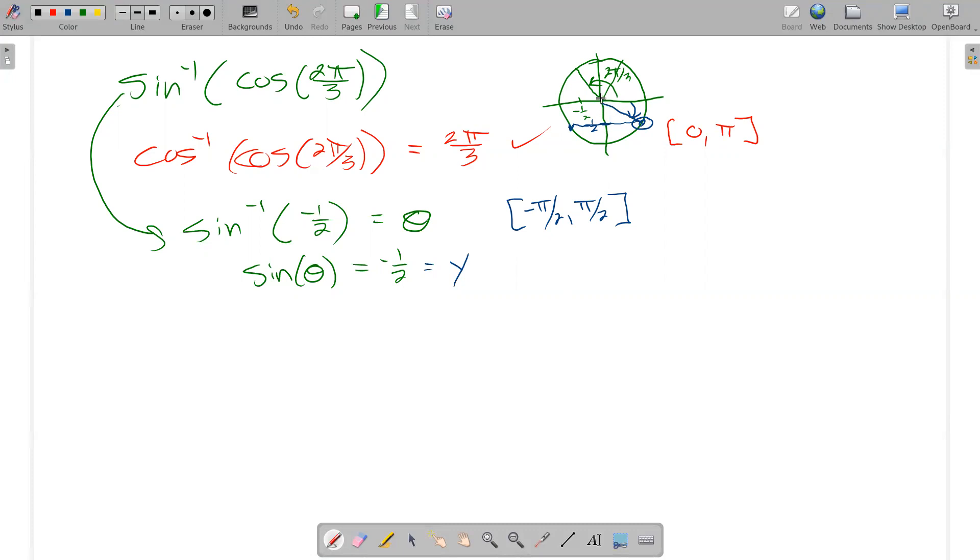And so that angle right there, where sine is 1 half, that should be negative π over 6.